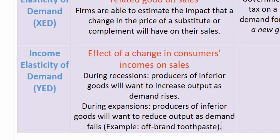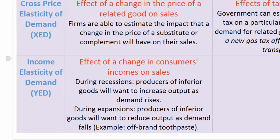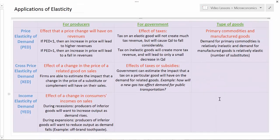Of course, if there is a producer of a normal good, it will want to know how much demand will fall when there is a particular decrease in income, or how much demand will rise when there is a particular increase in household incomes. Knowing the income elasticities of demand for their products allows producers to respond to rising or falling incomes appropriately.